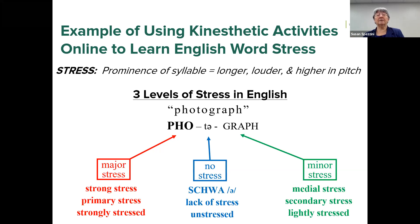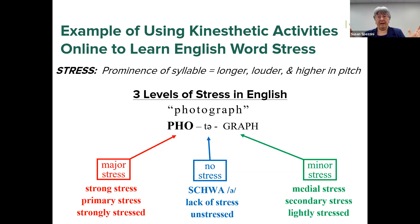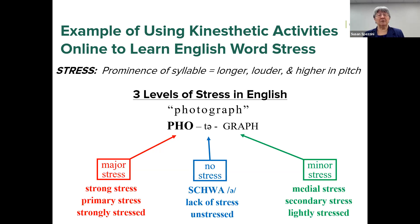In English there are three levels of stress, all visible in the word 'photograph.' The first syllable 'pho' has major stress — also called strong stress or primary stress. The second syllable is completely unstressed; unstressed vowels in English reduce to schwa, becoming very short and reduced. The third syllable 'graph' has minor stress — also called medial stress, secondary stress, or lightly stressed. In Spanish there are only two levels: a syllable is either stressed or it isn't.